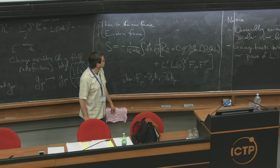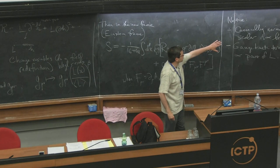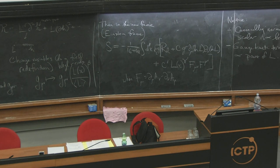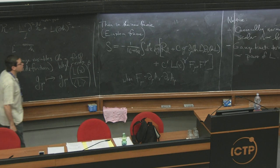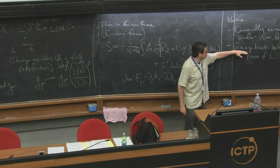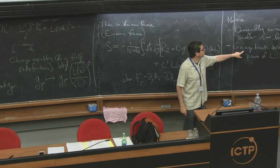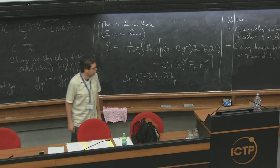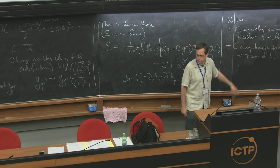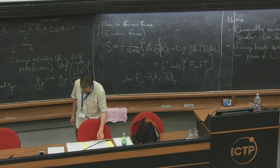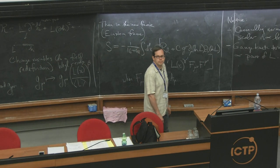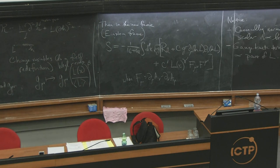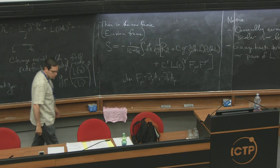The canonically normalized scalar is proportional to the log of L, but the gauge kinetic term is proportional to a power of L. This reflects a very generic fact about theories of quantum gravity. The gauge coupling depends exponentially on the canonically normalized scalar: it depends on a power of L, but the canonically normalized thing is the log of L, so if we rewrite in terms of the canonically normalized field, it's an exponential dependence.